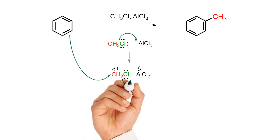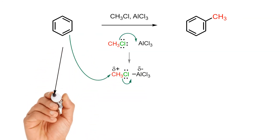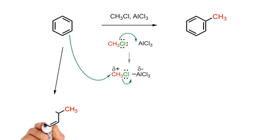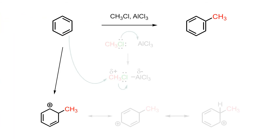The benzene is then forced to react as a nucleophile and attack the alkyl group, with loss of the leaving group to form the sigma complex intermediate. The formation of the carbocation is the rate-determining step in this reaction. Even though the carbocation is not aromatic, it is stabilized significantly through delocalization across the remaining pi system.